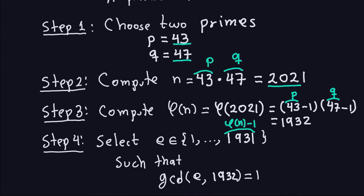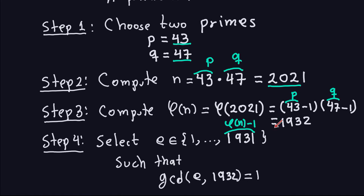Step three: compute the Euler phi function of n. This is the count of numbers coprime to n between 1 and n. Because n is the product of two primes, phi(n) equals (p−1)(q−1), which is 42 times 46. Computing that gives 1932.